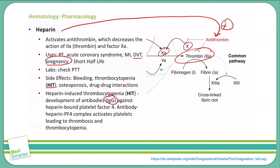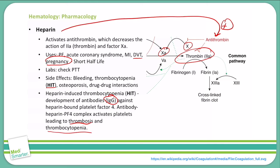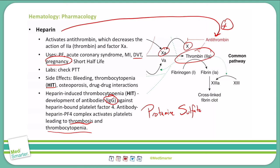What is heparin-induced thrombocytopenia? What's happening is we're getting antibodies — specifically IgG antibodies — going against that heparin-bound platelet factor 4. These antibodies bind to the heparin-platelet factor complex, activating the platelets and leading to their consumption, which gives us a thrombosis. Because the platelets are being consumed to make this clot, we then have thrombocytopenia. If we need to rapidly reverse heparin due to a major bleeding event, we can use the antidote protamine sulfate — a positively charged molecule that binds strongly with the negatively charged heparin.